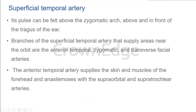The anterior temporal artery supplies the skin and muscles of the forehead region, and it also anastomoses with the supraorbital and supratrochlear arteries. The supraorbital and supratrochlear are branches from the internal carotid, so here again there is mixing of internal and external carotid artery blood. There is one more important branch supplying deeper structures — that is the maxillary artery.